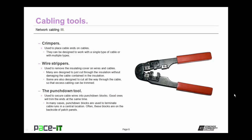Next up are wire strippers. Wire strippers are used to remove the insulating covers on wires and cables. Many are designed to just cut through the insulation without damaging the cable contained within that insulation. But some are also designed to cut all the way through the cable so that excess cabling can be trimmed. When you're using those to cut insulation, you need to be careful that you don't cut the underlying cable.